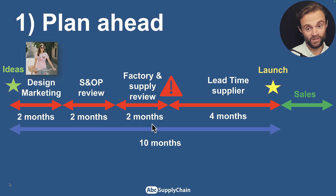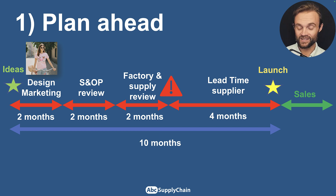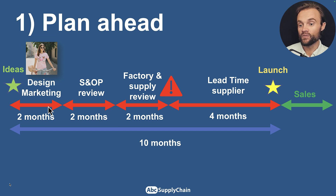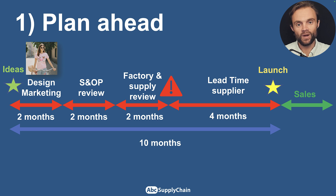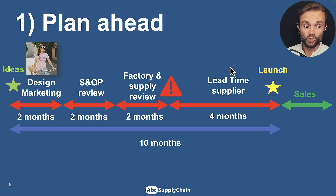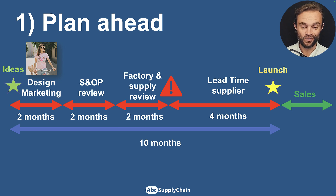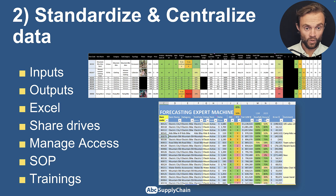Step one is to plan ahead — to have a real planning process. I've been forecasting new products for the last 15 years, and most of the time we are late. We are not clear about who is responsible for what, what is the full lead time from design, the S&OP review, the sales and operations planning, the factory and supply review, and all supplier lead times. Most of the time we're running like firefighters. It's very important to be clear on all the steps from idea to product launch, and what the deadline is to submit the forecast to production.